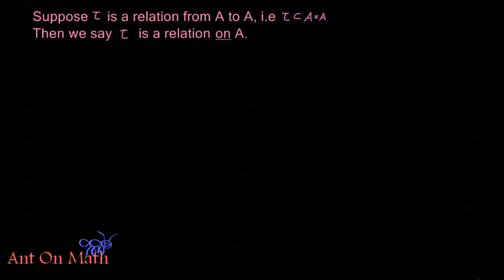Suppose tau is a relation from the set A to itself, so from A to A. In other words, tau is a subset of the cross product A cross A. Then we say tau is a relation on A, and we have a couple of different things. First, we have a special relation of this type called the identity relation.